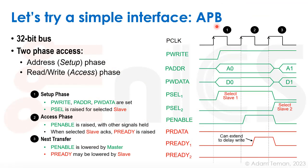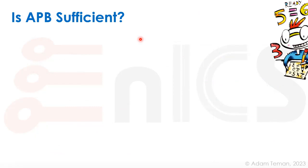Now let's see if a simple on-chip interface — APB, which we covered last lecture — is sufficient for Ethernet. APB is a 32-bit bus with a two-phase access: the first phase is the Setup phase, where we put our address, data, and select our slave; the second is the Access phase, where we perform the actual read or write. So it takes two cycles to send or receive one 32-bit transmission.